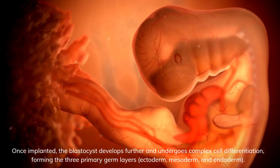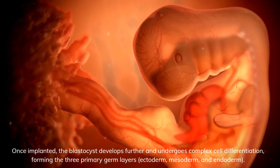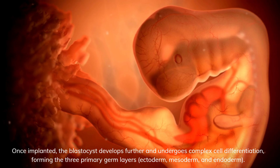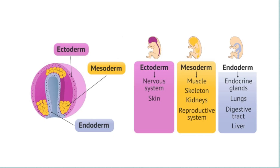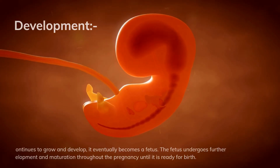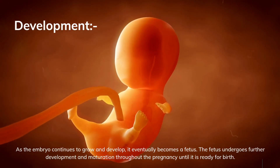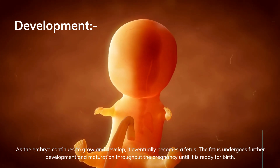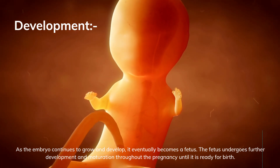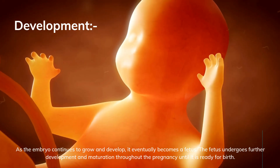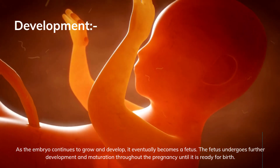Once implanted, the blastocyst develops further and undergoes complex cell differentiation, forming the three primary germ layers: ectoderm, mesoderm, and endoderm. As the embryo continues to grow and develop, it eventually becomes a fetus. The fetus undergoes further development and maturation throughout the pregnancy until it is ready for birth.